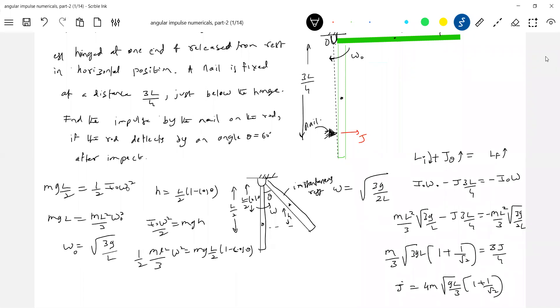See, we are in a position to calculate impulse. What is impulse? Impulse is force times time. Can we calculate for what time the rod was in contact with the nail? We can't do all that, not possible. But we are able to tell the impulse.